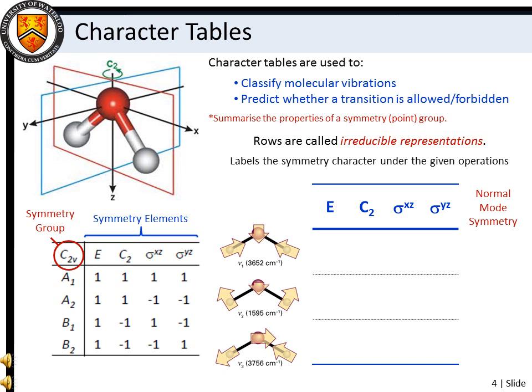For example, consider the normal modes of water: the symmetric stretch, the symmetric bend, and the asymmetric stretch. We can describe the normal modes of water with displacement vectors. The symmetric motions have the hydrogen atoms moving in phase with one another, while the asymmetric stretch motions of the hydrogen atoms are out of phase.